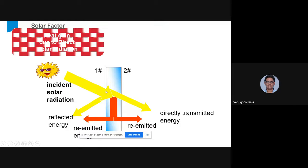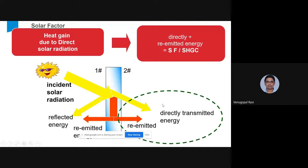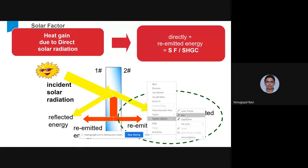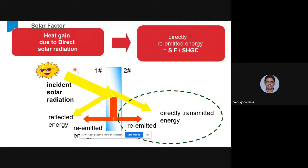The second parameter is the solar factor. When infrared radiation falls on glass, some percentage is directly transmitted (directly transmitted energy), some is reflected, and some is absorbed and re-radiated inside and outside. The solar factor is the ratio of directly transmitted energy plus re-emitted energy divided by the incident solar radiation. This ratio tells you on average how much percentage of heat is entering the building directly from the sun.